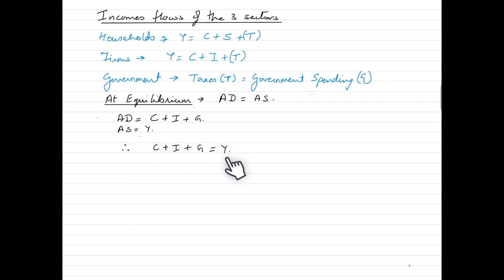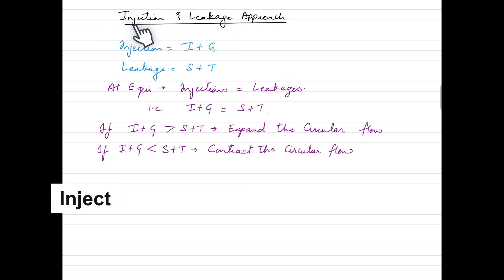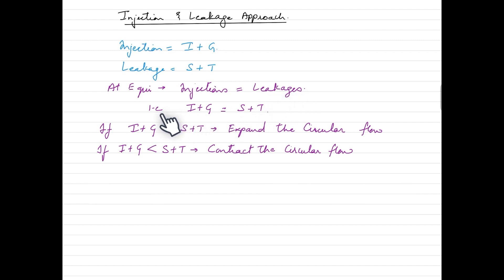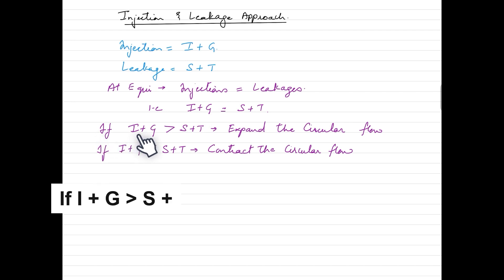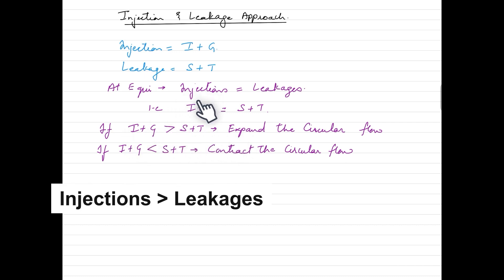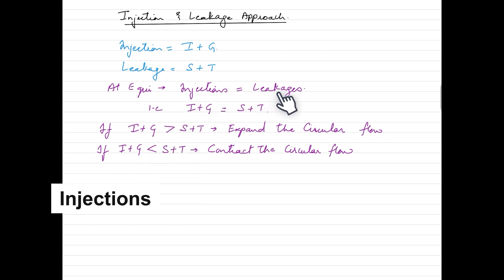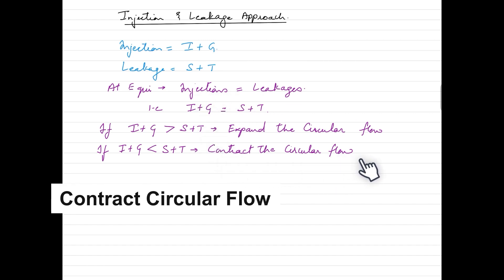The second approach is the injections and leakages approach. In this model, injections are investment (I) and government expenditure (G), while leakages are savings (S) and taxes (T). At equilibrium, total injections equal total leakages: I + G = S + T. If I + G is greater than S + T, there are more injections than leakages, which expands the circular flow. If I + G is less than S + T, more leakages than injections will contract the circular flow.